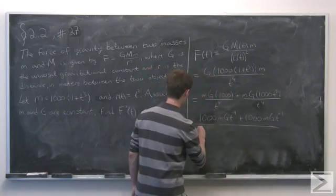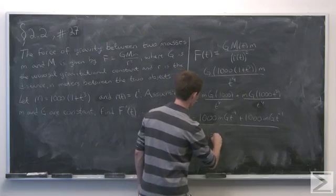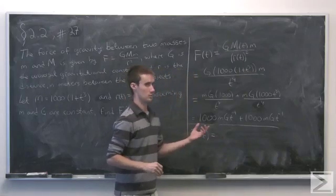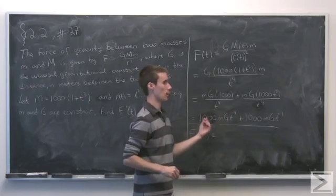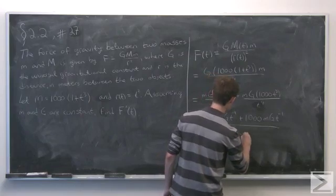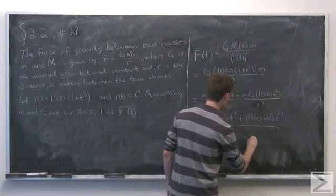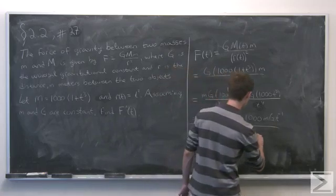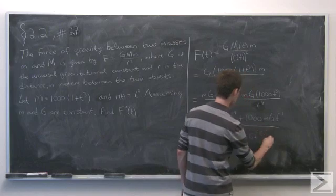So now we can compute the derivative. So we apply the power rule, we multiply by the exponent, so we have minus 4,000 m G. And here we lower the exponent by 1, so that goes down to minus 5.